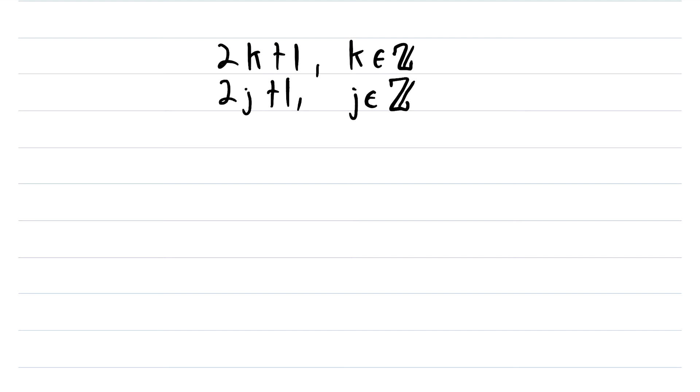The claim is about the product of two arbitrary odd numbers. So we start off with these two arbitrary odd numbers. It's important that we use different variables here, because if we used the same variable, we'd be assuming that the odd numbers are equal, and that's not what the claim is about.